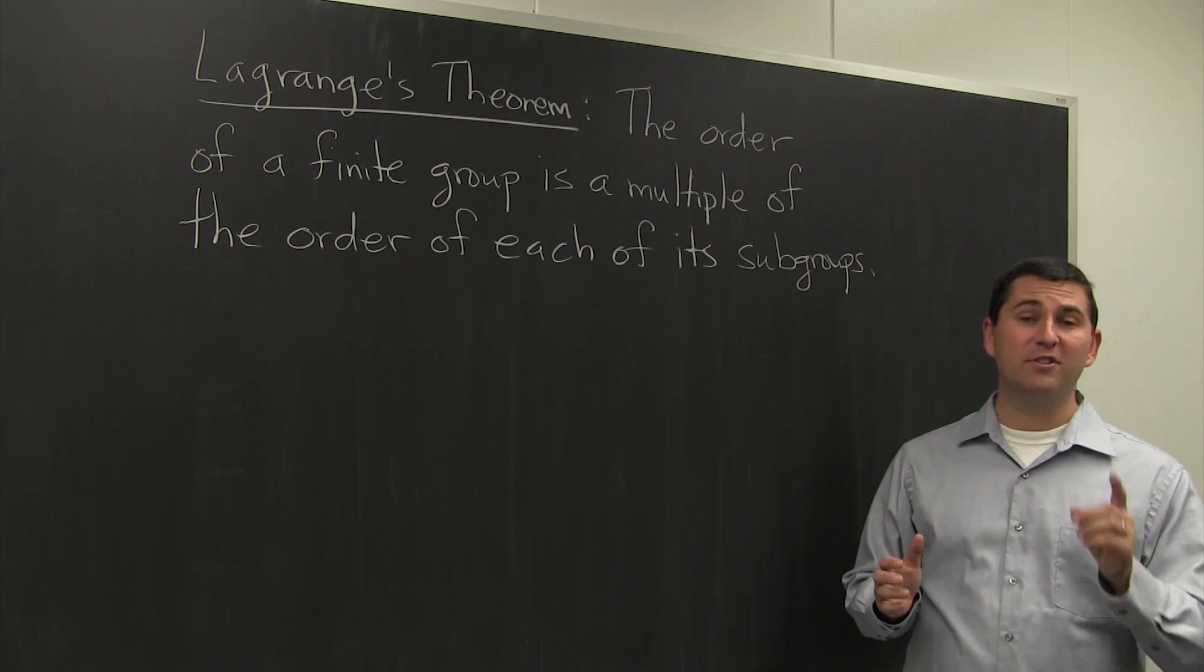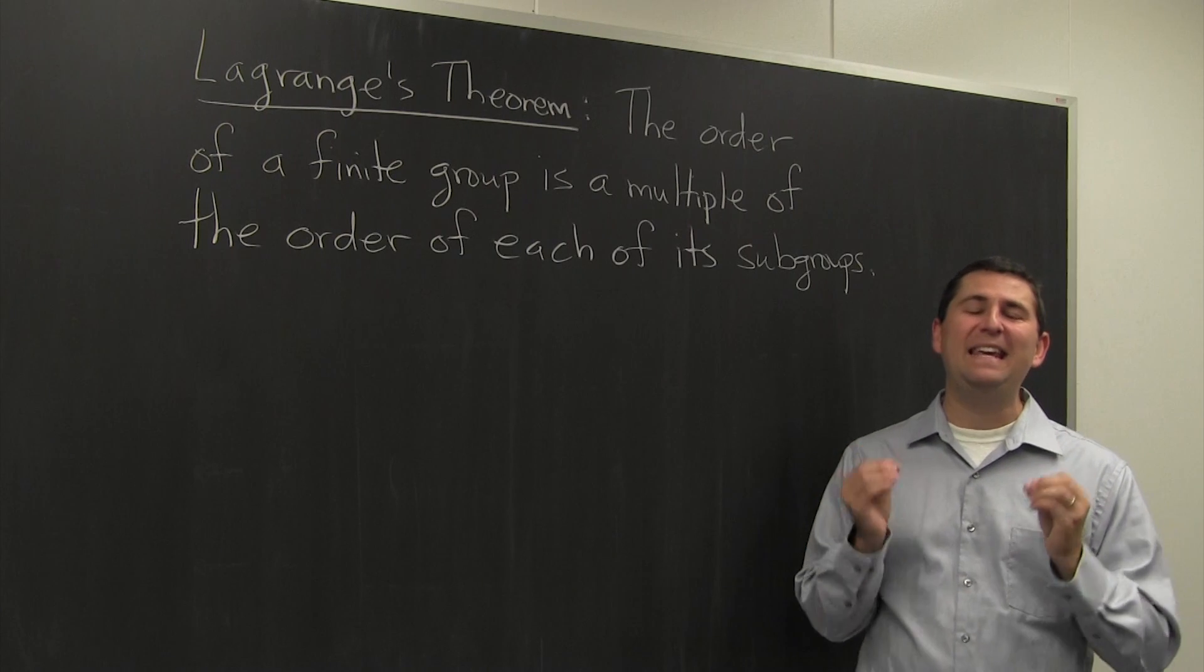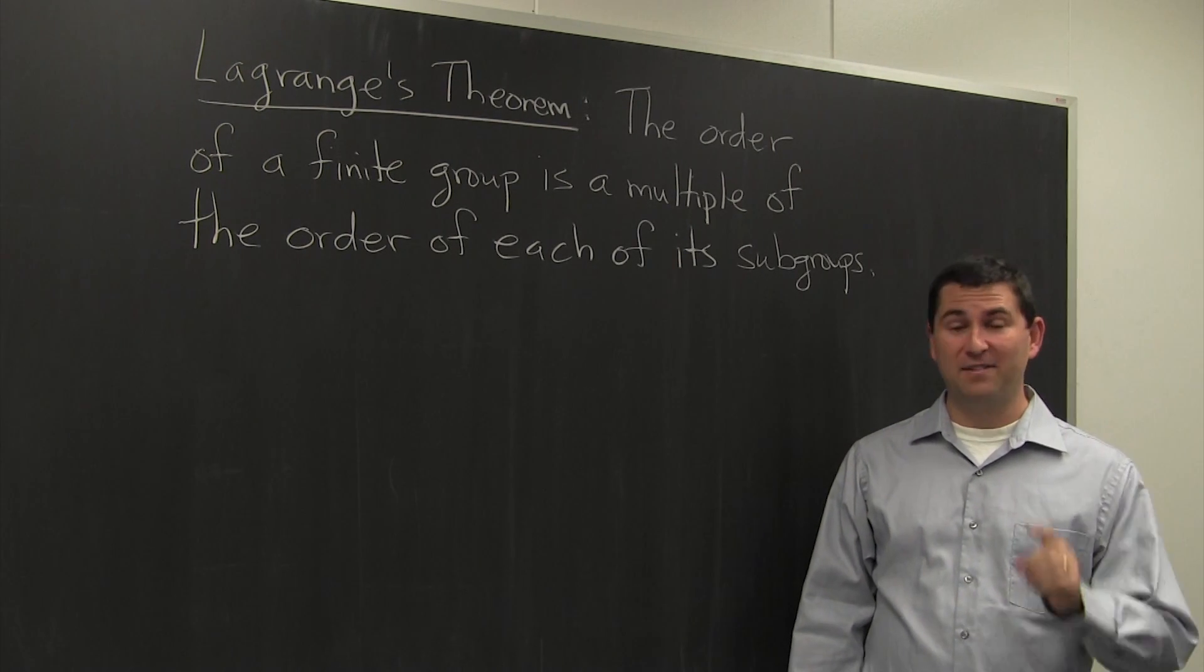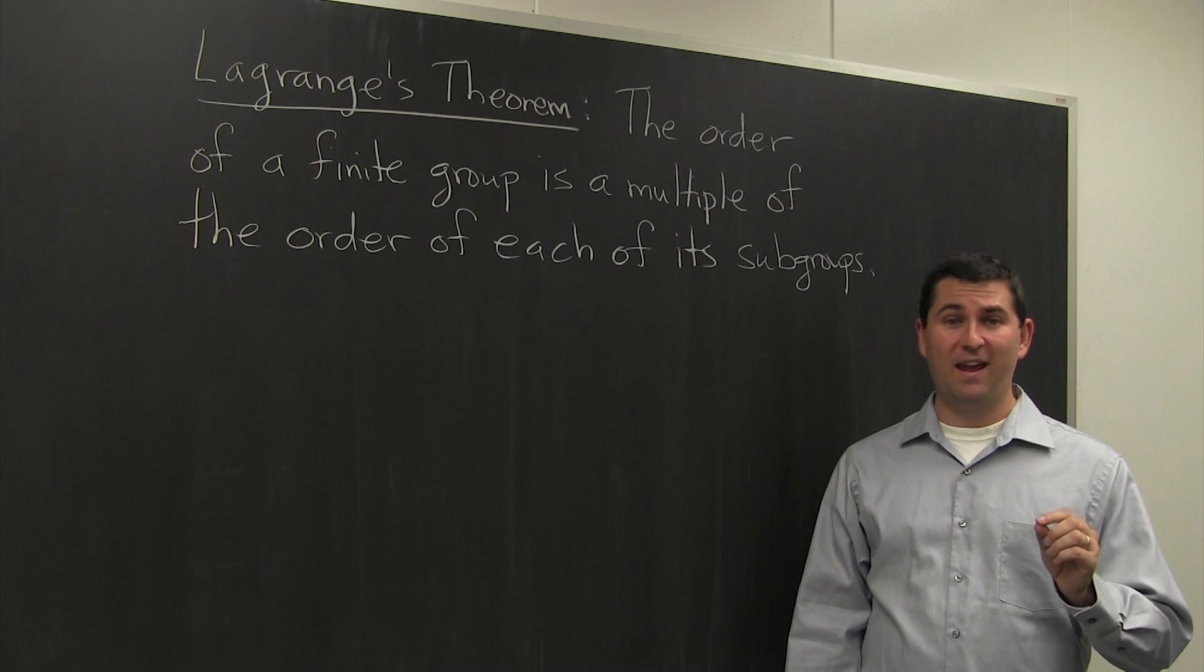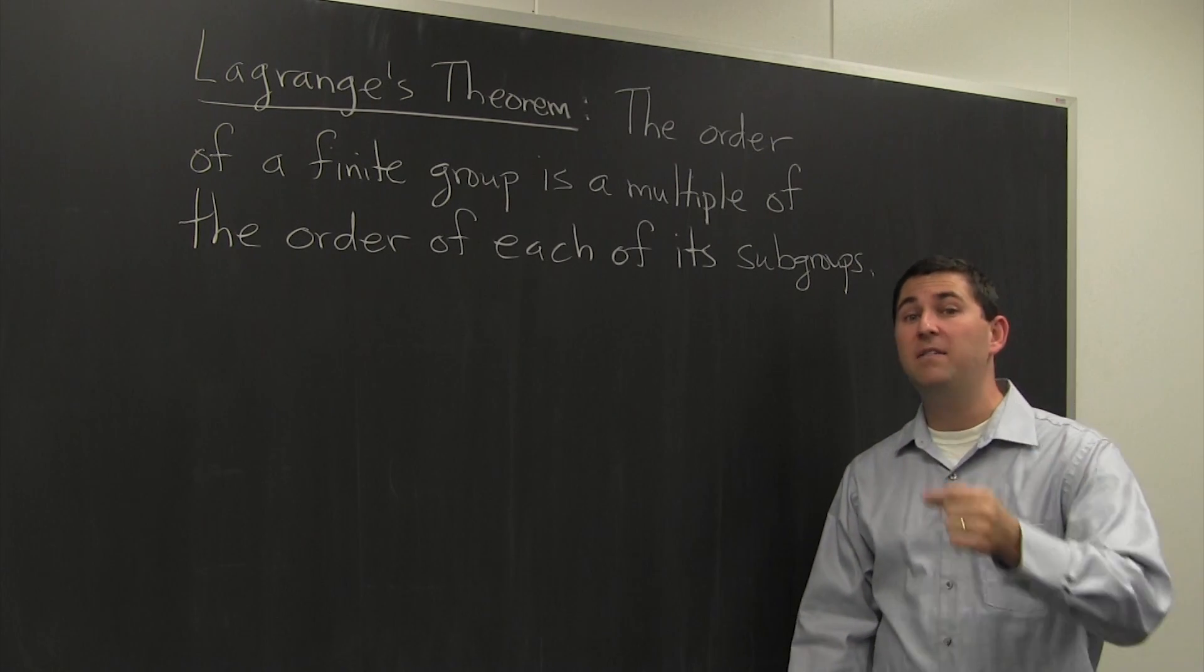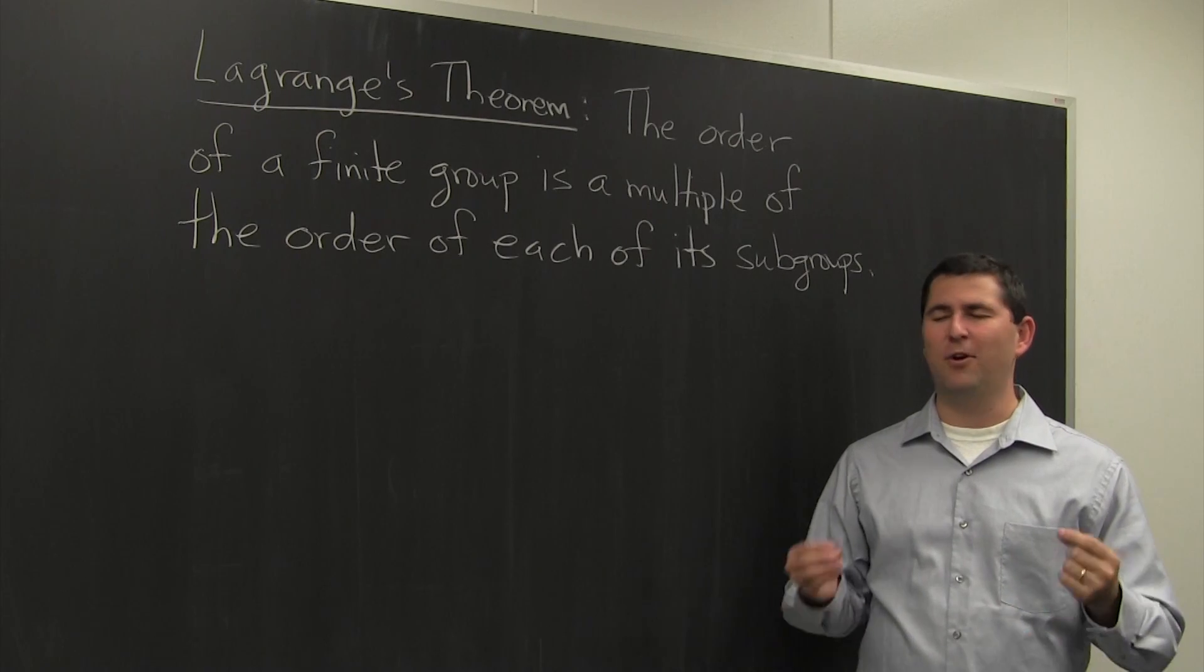However, Lagrange's Theorem is also one of the easiest things to get wrong in a first course in group theory, because the converse, which would say that if a number divides the order of the group, then there is a subgroup of that order, is so enticing.